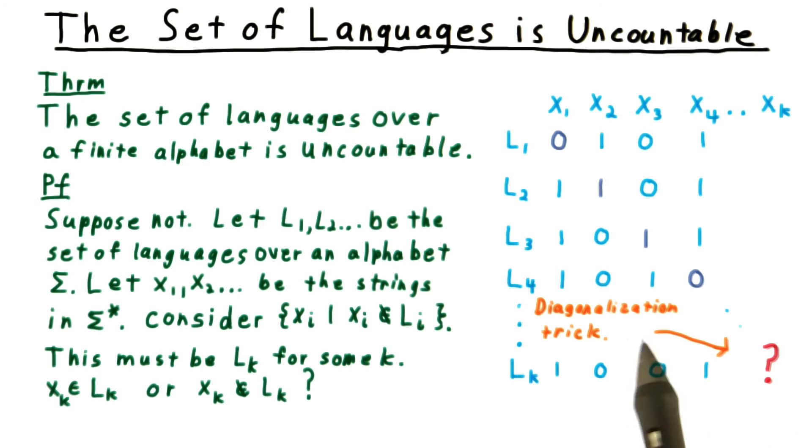This argument is known as the diagonalization trick, and we'll see it come up again later when we discuss undecidability.